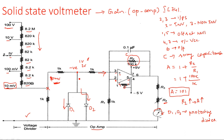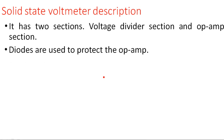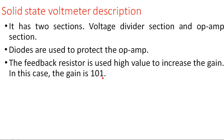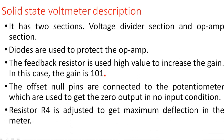So both diodes remain off under normal operation, and the operational amplifier functions normally. If extreme conditions like negative voltage or voltage exceeding the threshold occur, the diode turns on and protects the operational amplifier. To summarize: the solid-state voltmeter has two sections — voltage divider and op-amp. Diodes protect the op-amp, the feedback resistor sets the gain at 101, offset null pins with a potentiometer zero the output at no input, and R4 is adjusted for maximum deflection.